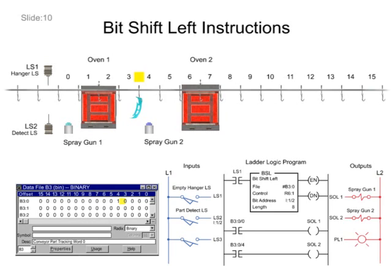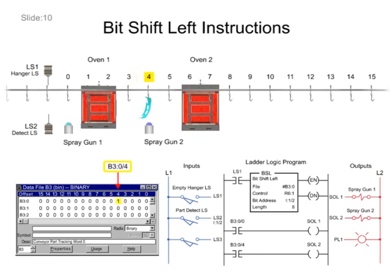Shifting to the fourth bit of the word, bit 4 input status is true, and the top coat spray gun solenoid is energized, completing the paint process.